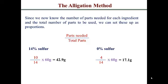You can also get your second number by subtracting your first from the total quantity. After calculating the 14% sulfur quantity, we know our total is 60 grams. So we can subtract 42.9 from 60 and that still gives us 17.1. You have some flexibility on how to compute the quantity of the other component when you have two components. Hopefully that was really clear — it's fun and easy.